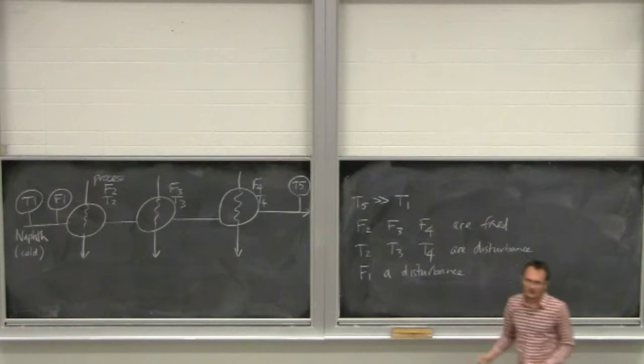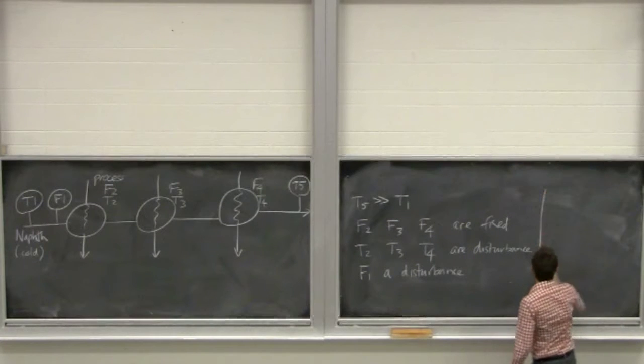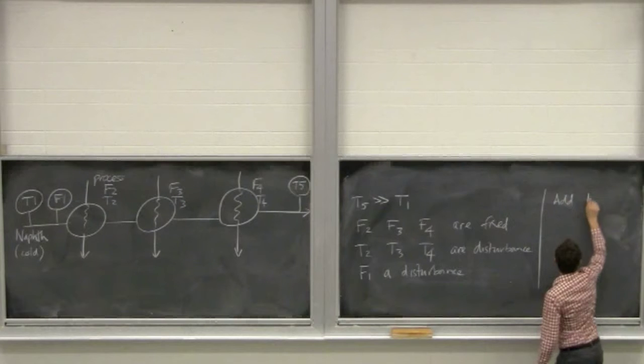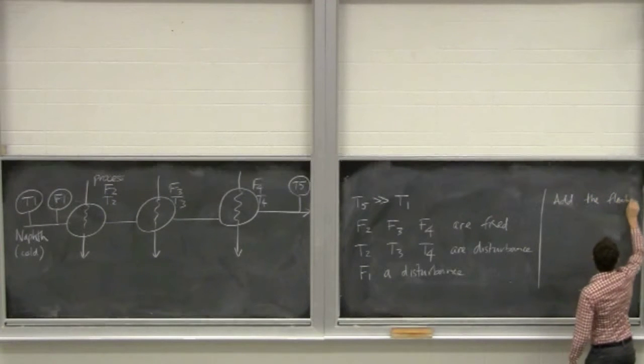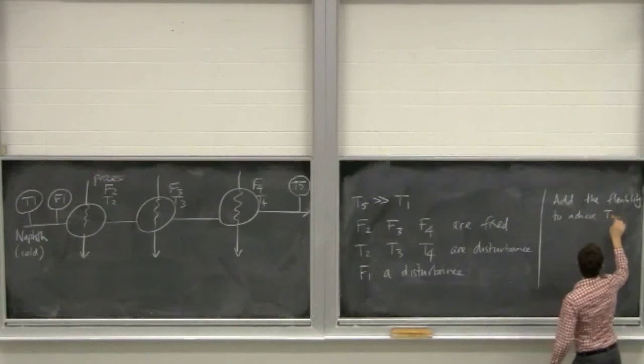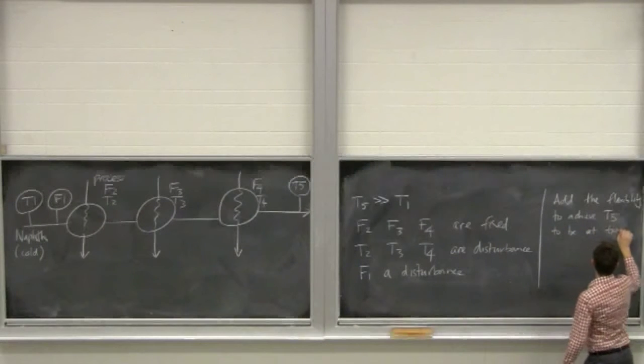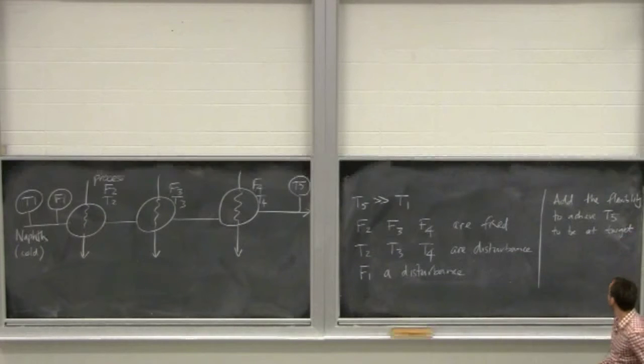And F1 is also a disturbance. Okay. In the sense that our plant operators might set that to a certain value in order to achieve the production rates that are required. So your goal here is add the necessary flexibility to achieve T5 to be at setpoint or at some target.